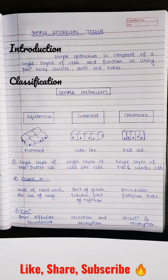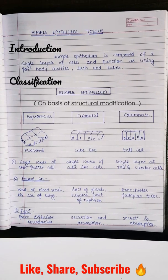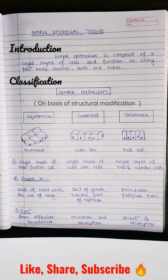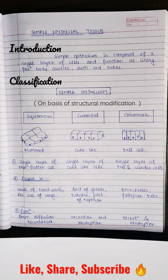On basis of structural modification, simple epithelium is divided into squamous, cuboidal, and columnar epithelium. Squamous epithelium consists of a single layer of thin, flattened cells. They are found in walls of blood vessels, air sacs of lungs, and function in forming diffusion boundaries.